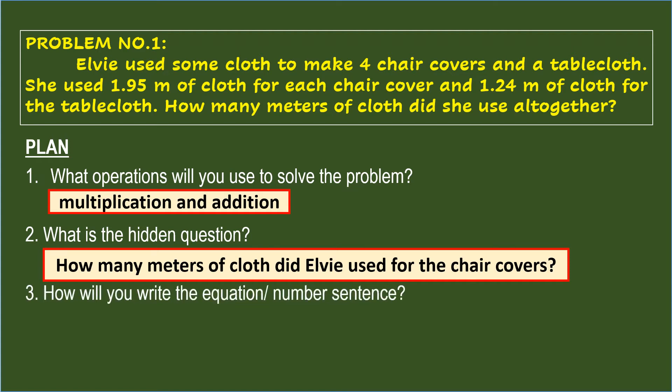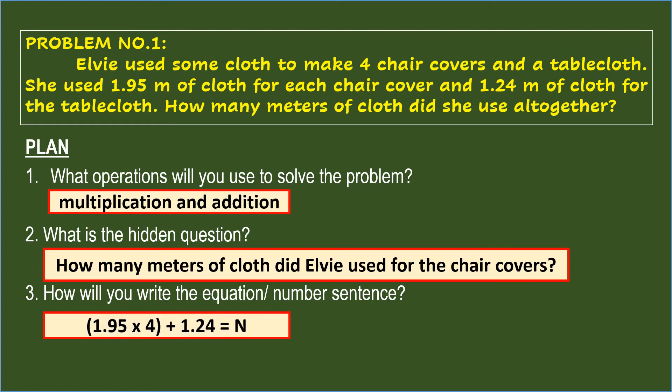The last question under the plan is: How will you write the equation or number sentence? This is the representation of how you will solve the problem. Using the given numbers and operations, the number sentence is: 1.95 × 4 + 1.24 = N.